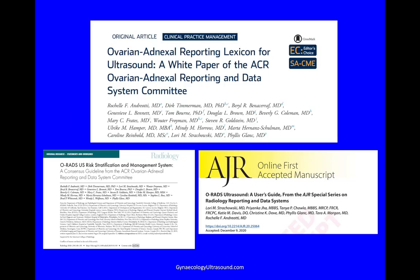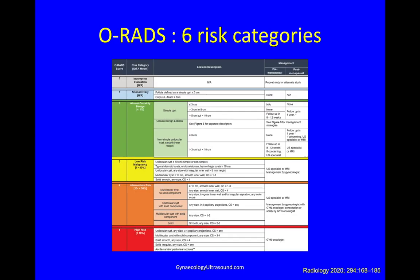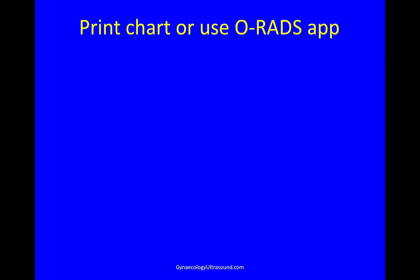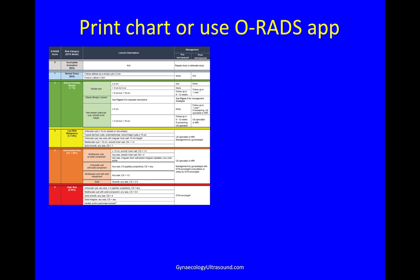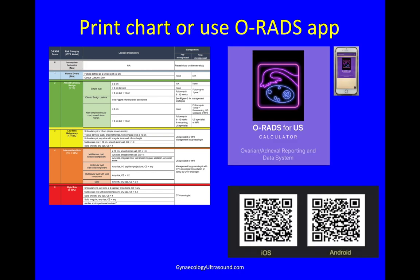The papers were published in 2020. The ORADS chart has two parts: pattern recognition — the lexicon — and an adnexal score. The ORADS score is 0, 1, 2, 3, 4, or 5. It also shows the ADNEX percentage risk of malignancy, the lexicon descriptors of what the mass looks like, and management suggestions. You can print the chart and hang it up at your reporting station, or download the app for your phone. QR codes are available.